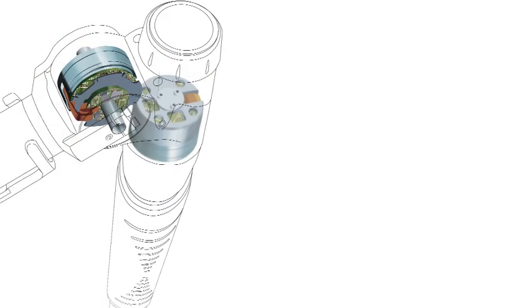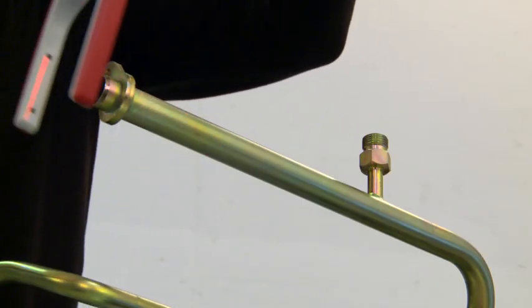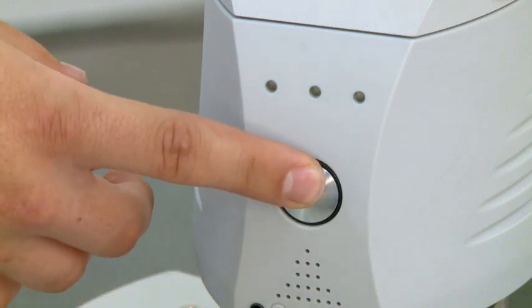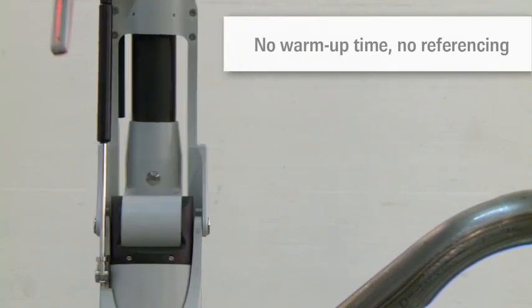Thanks to Absolute encoders, the Rahmer Absolute Arm is easy to operate. A referencing procedure required by earlier generations of measuring arms is no longer necessary. When the arm is switched on, it is ready to measure.